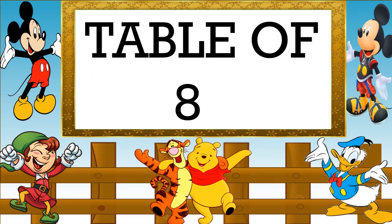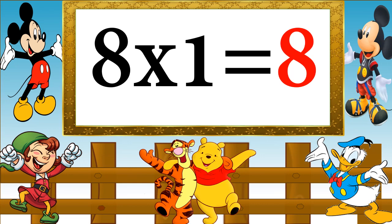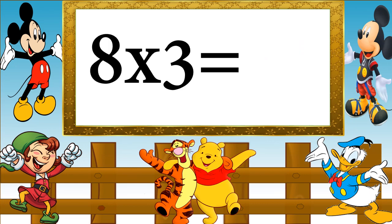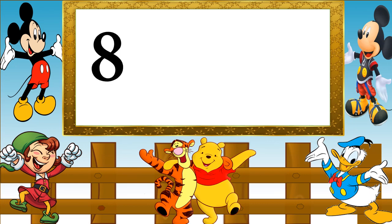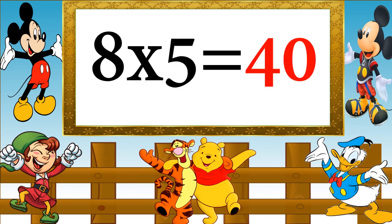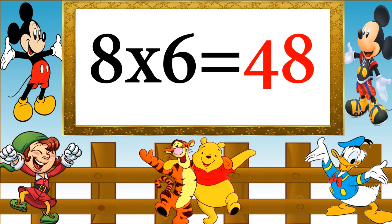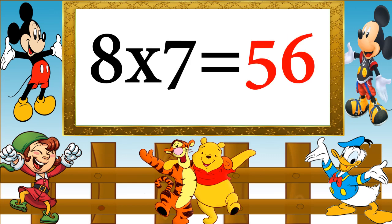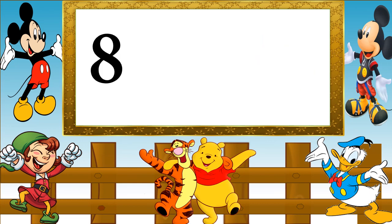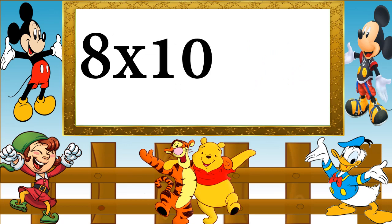Table of 8. 8 ones are 8, 8 twos are 16, 8 threes are 24, 8 fours are 32, 8 fives are 40, 8 sixes are 48, 8 sevens are 56, 8 eights are 64, 8 nines are 72, 8 tens are 80.